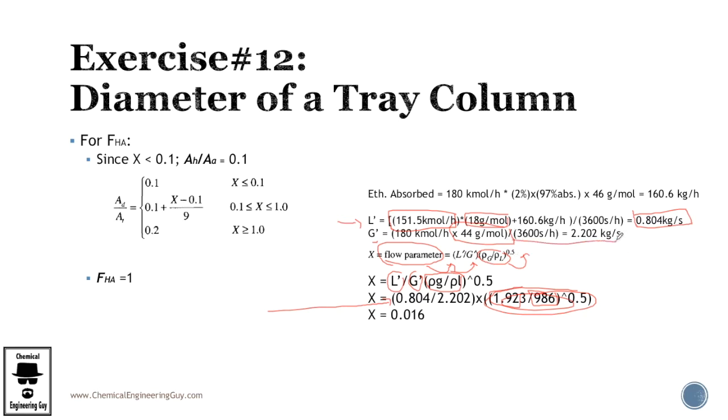So, keep going, and we will get this value and this value, which is right here, and right here. So, I did nothing special, I only changed seconds to hours, sorry, hours to seconds, and I changed kilomole per hour to gram mole. And after that, doing this operation, the X flow parameter,